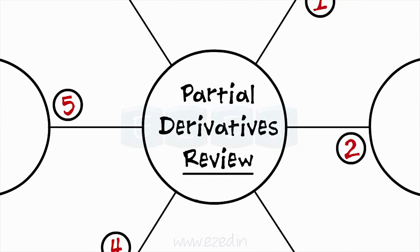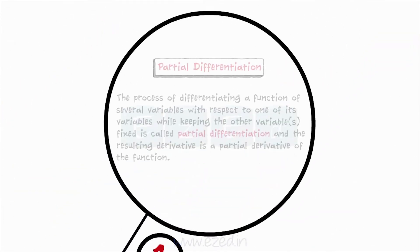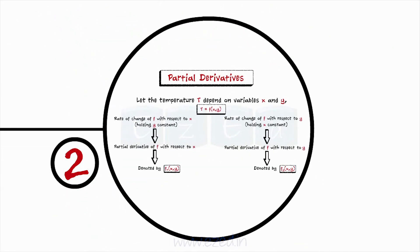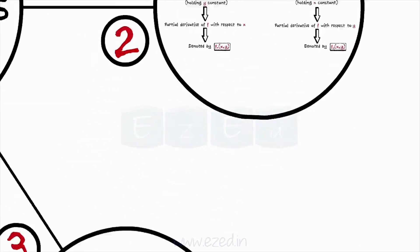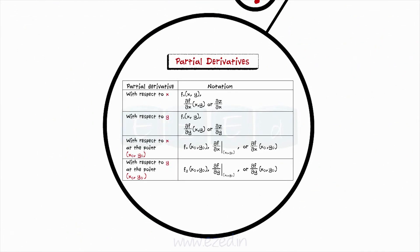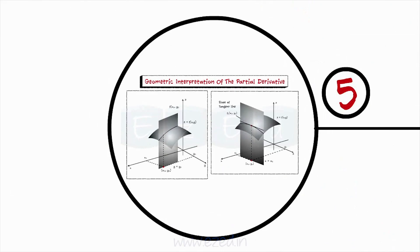Let us have a quick review of what we have studied in this lecture. We started with the definition of partial differentiation. Then we moved on to the meanings of partial derivatives with respect to x and y, and saw their formal definitions. We examined different notations for partial derivatives, then the geometric interpretation of partial derivatives. Finally, we understood the meaning and computation of total derivatives.